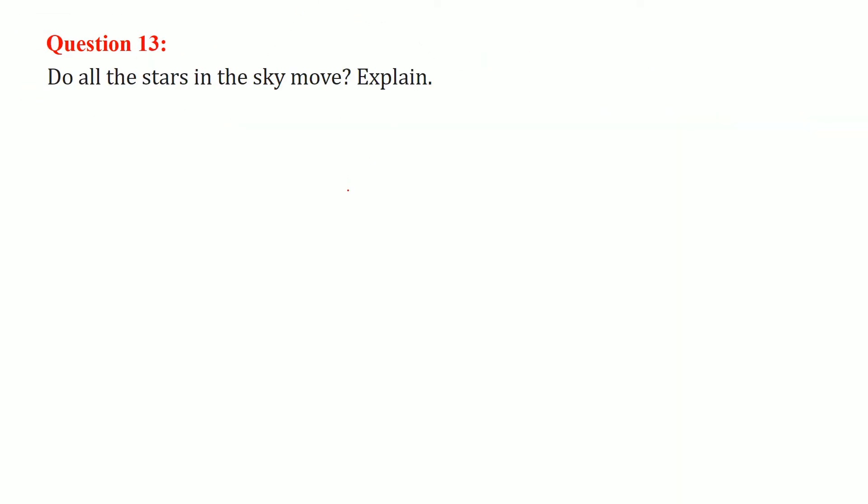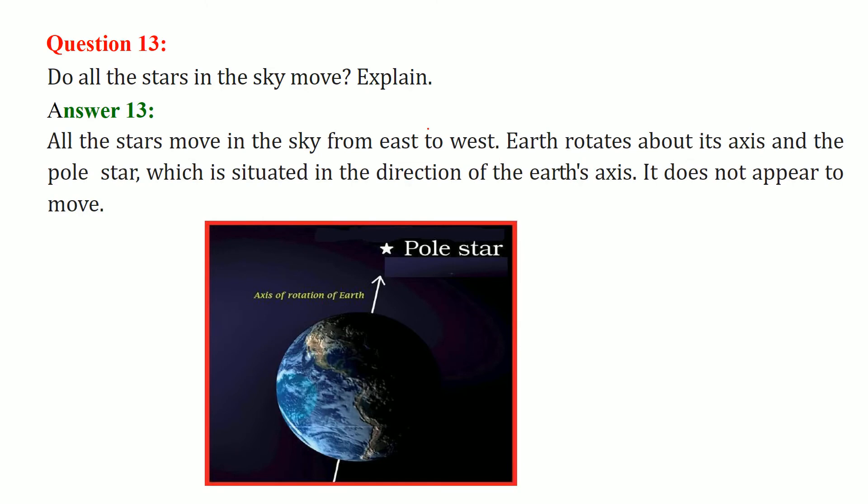Do all the stars in the sky move? You can explain. All the stars in the sky move from east to west. Now, this is Earth. It rotates around its axis. The pole star is situated in the direction of the Earth's axis. That is why the pole star does not appear to move.